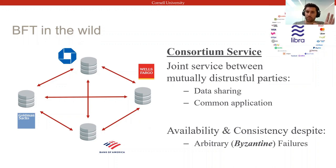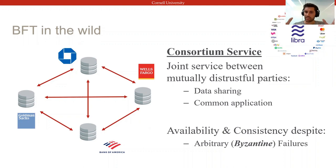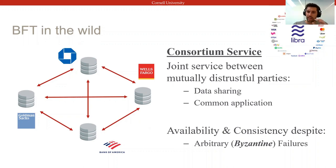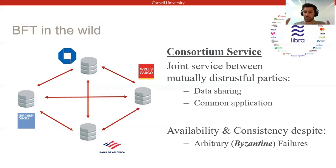This consortium of banks is made up of a permissioned, well-defined group of participants, and yet they all have potentially selfish interests, which we model as Byzantine failures, and are mutually distrustful of one another. To cooperate, these actors need solutions that allow them to maintain consistency and availability of their joint service, despite some potentially misbehaving or being compromised.